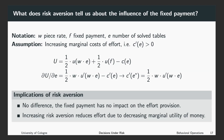Let us write down the implications of risk aversion. Risk aversion says there is no difference — the fixed payment has no impact on the effort provision. So risk aversion cannot explain why there is a difference between the two treatments. Furthermore, increasing risk aversion would reduce effort due to decreasing marginal utility of money. Getting more risk averse implies that you would exert less effort. One way to think about it is that by decreasing your effort, you can insure yourself against working without getting a reward for it.